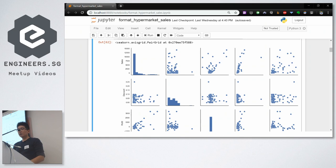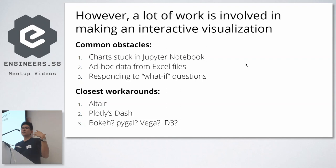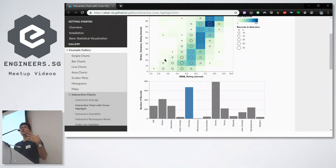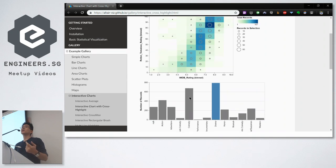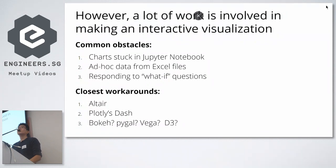Some workarounds you can use include Altair or Plotly — Plotly to a large extent achieves what I'm trying to do here, so you can learn about that as well. But even if you learn a new package, number one the effort is so much, and number two the interactivity is sometimes limited. What if you have other charts or other datasets involved?